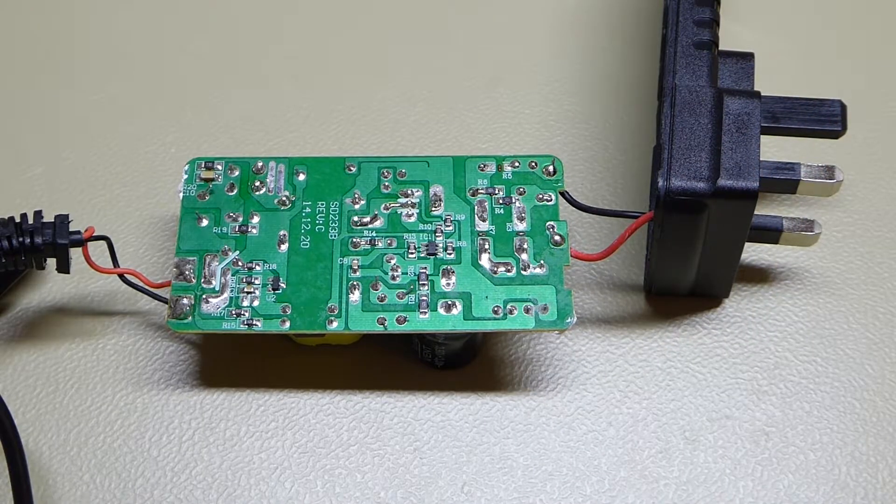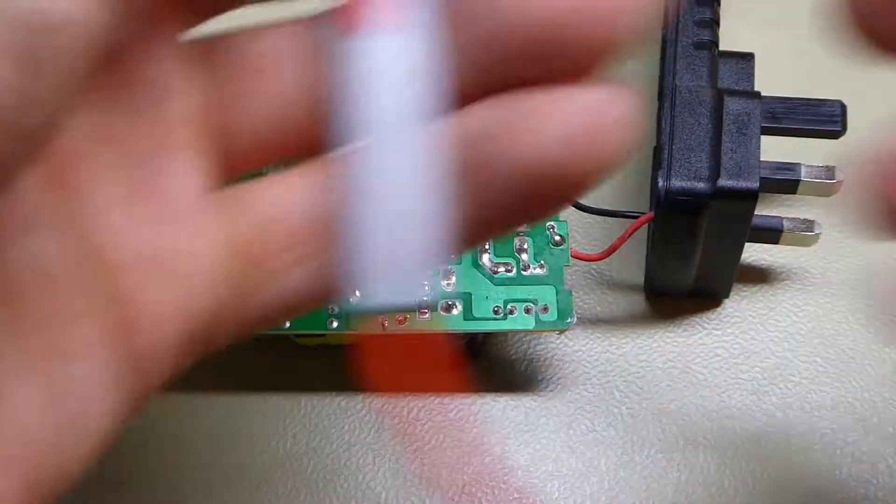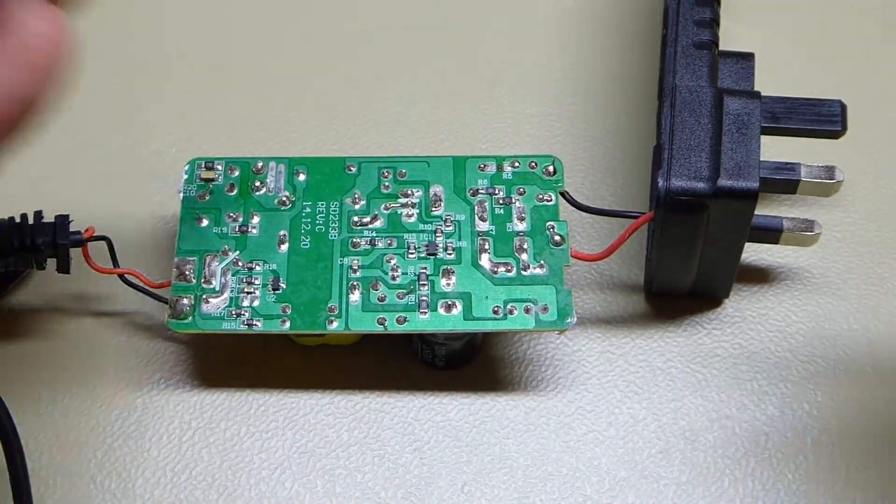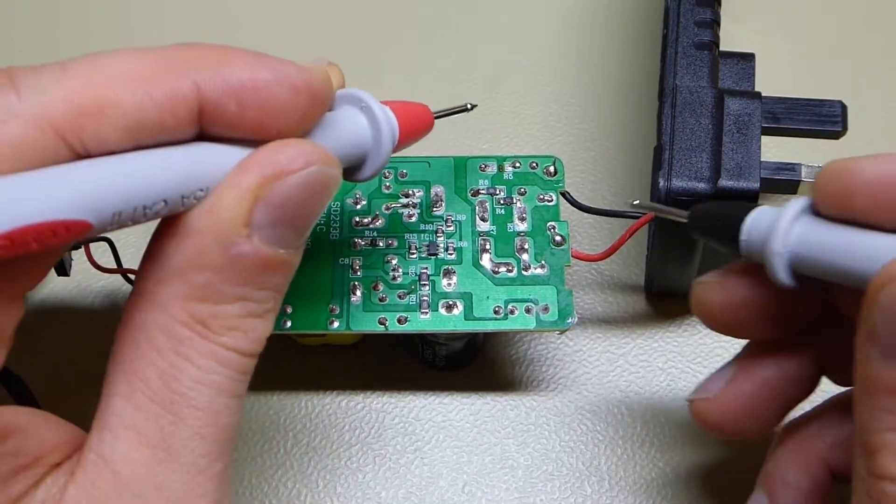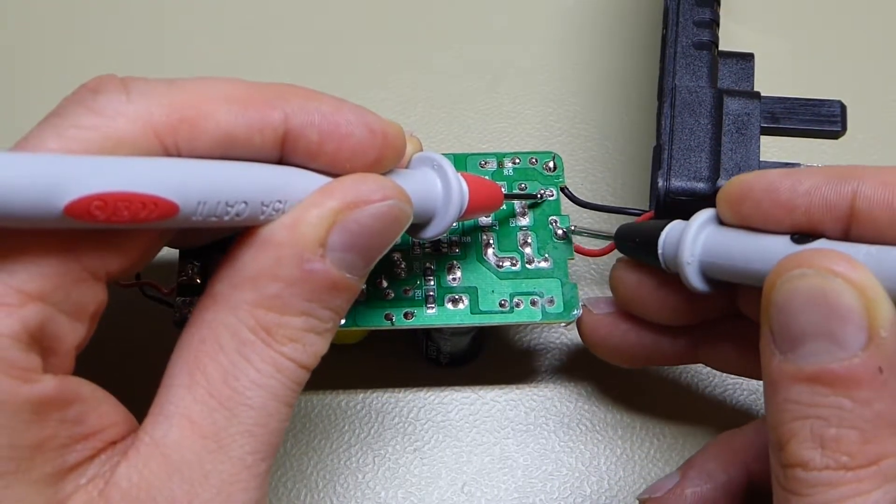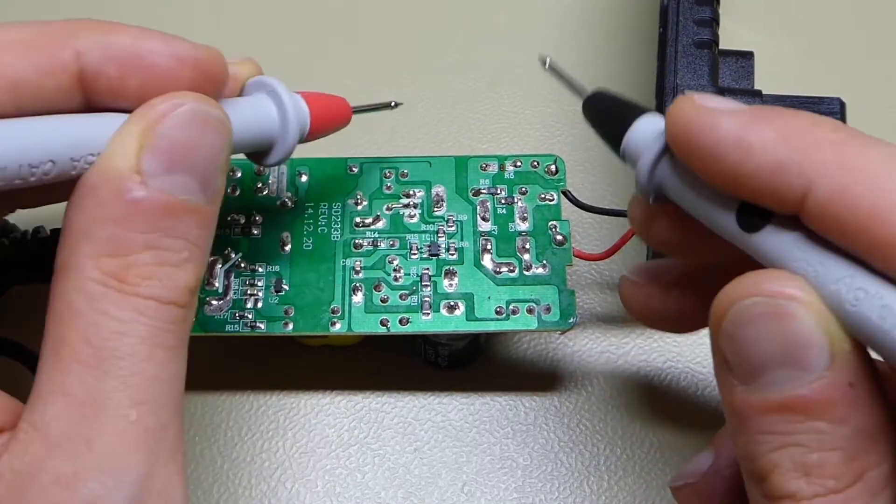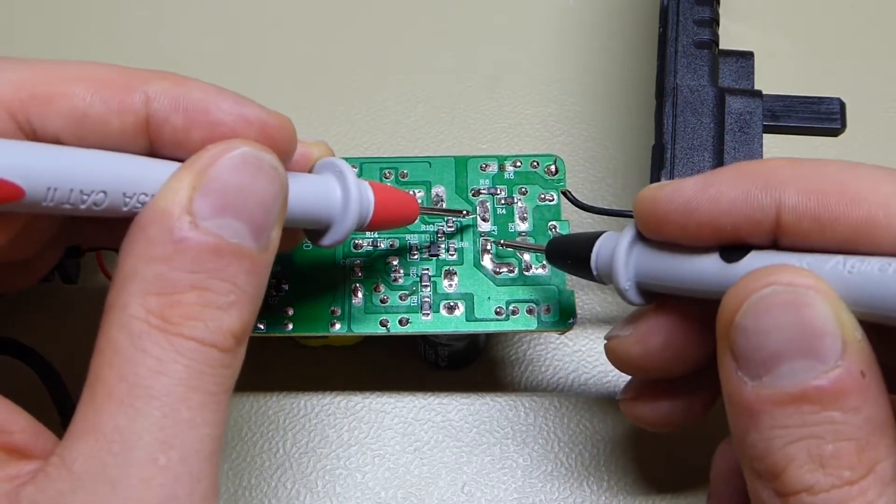Just to prove that I'm not completely mad, let's see what the continuity tester has to say about the choke. So that works. And for example if we look at the fuse here, we get continuity. The NTC also.